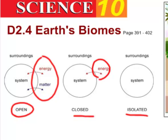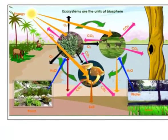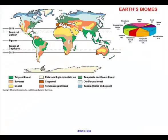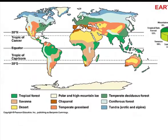Ecosystems on the planet are open systems — they exchange both energy and matter with their surroundings. They are not closed; both matter and energy can get in and out.